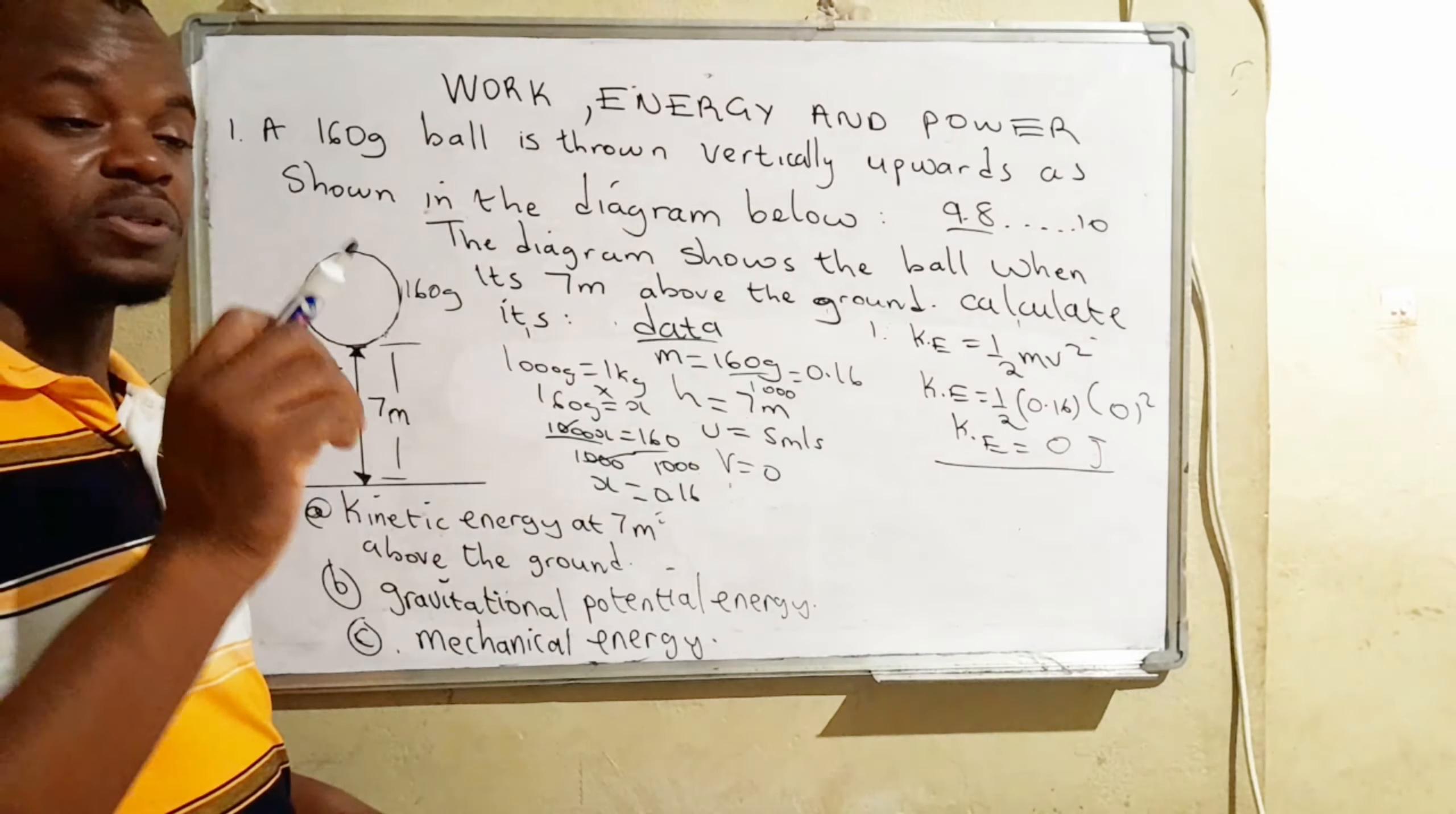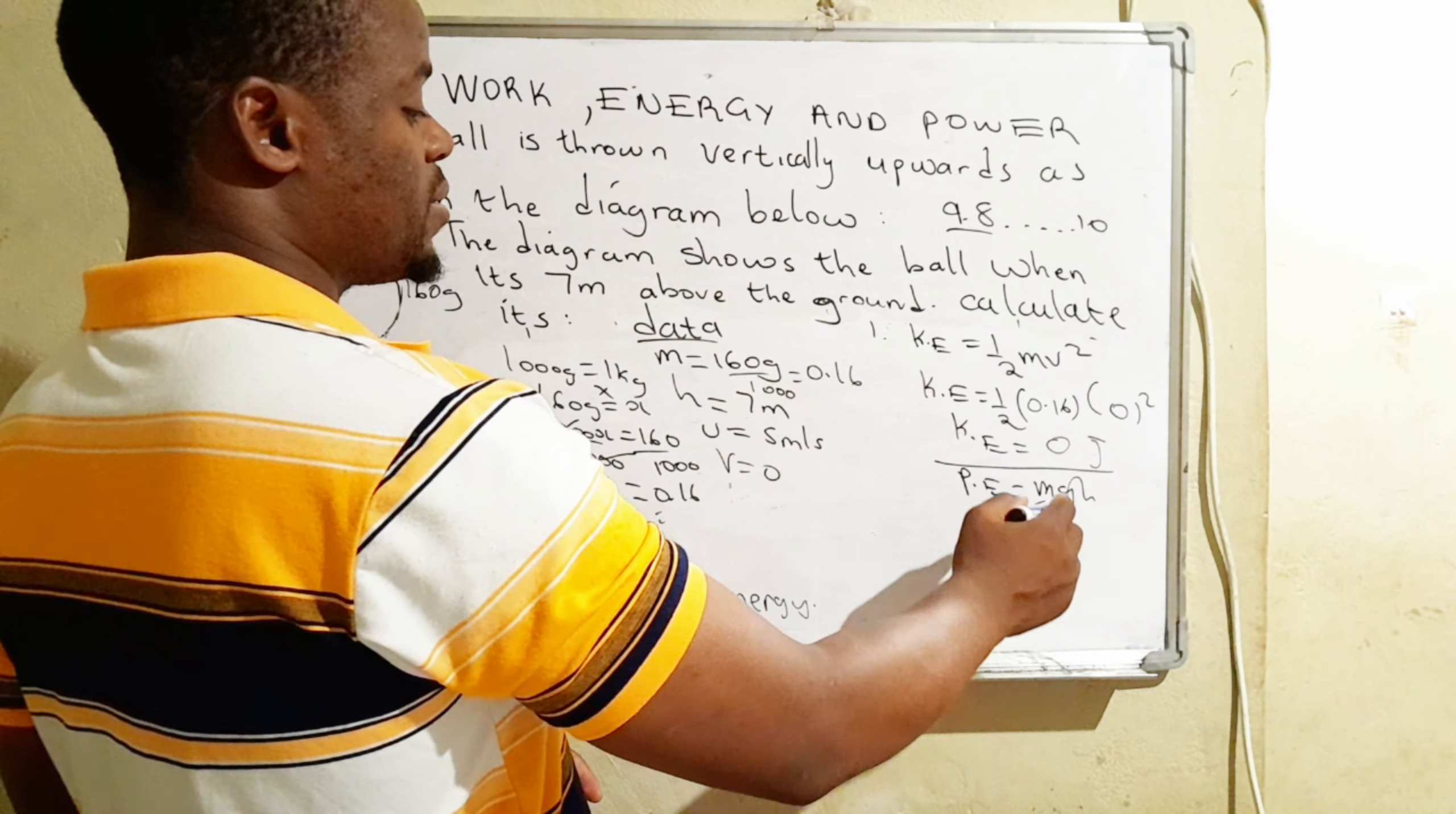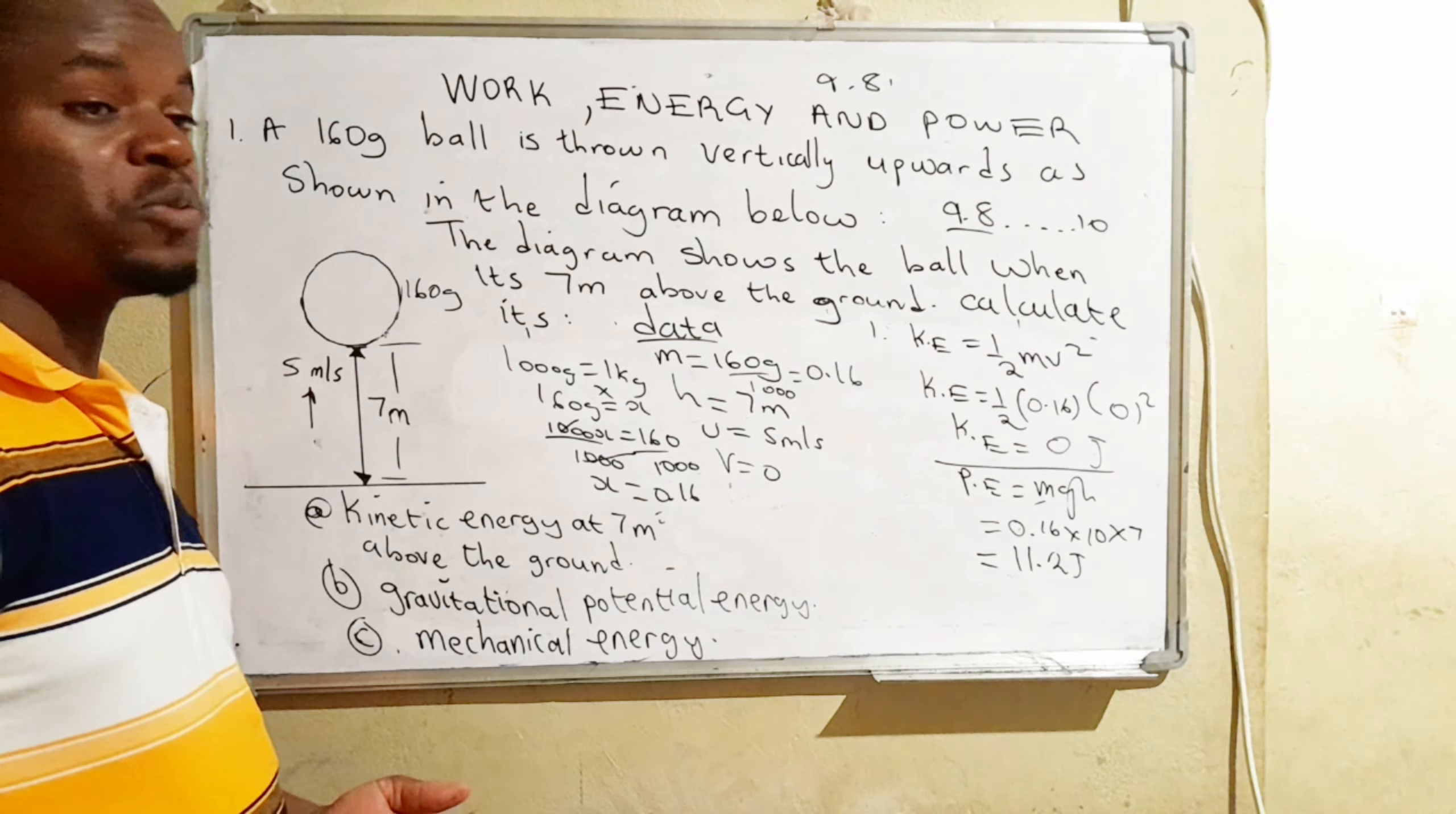Let's move on to the second one. Calculate the gravitational potential energy. So gravitational potential energy is given by PE is equal to MGH. So PE denotes potential energy. Then M denotes mass. G denotes force of gravity. And H denotes height. Let's plug in the values. What is the mass? 0.16 times. What's the force of gravity? That's always given as 10, or it is 9.8 something something. So when you round it off to the nearest ones, you have 10. Then the height is 7. When you multiply out those figures, you're going to have 11.2 joules.